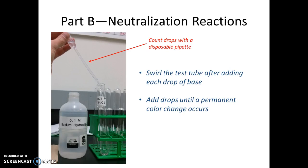Next, add the base: 0.1 M sodium hydroxide, counting drops carefully using another disposable pipette for uniform drops. Be very careful as you add the base — swirl the test tube to mix after each drop. I suggest working with your partner: one person adds and counts drops of base while the other holds the test tube and swirls it after each addition, ensuring thorough mixing.